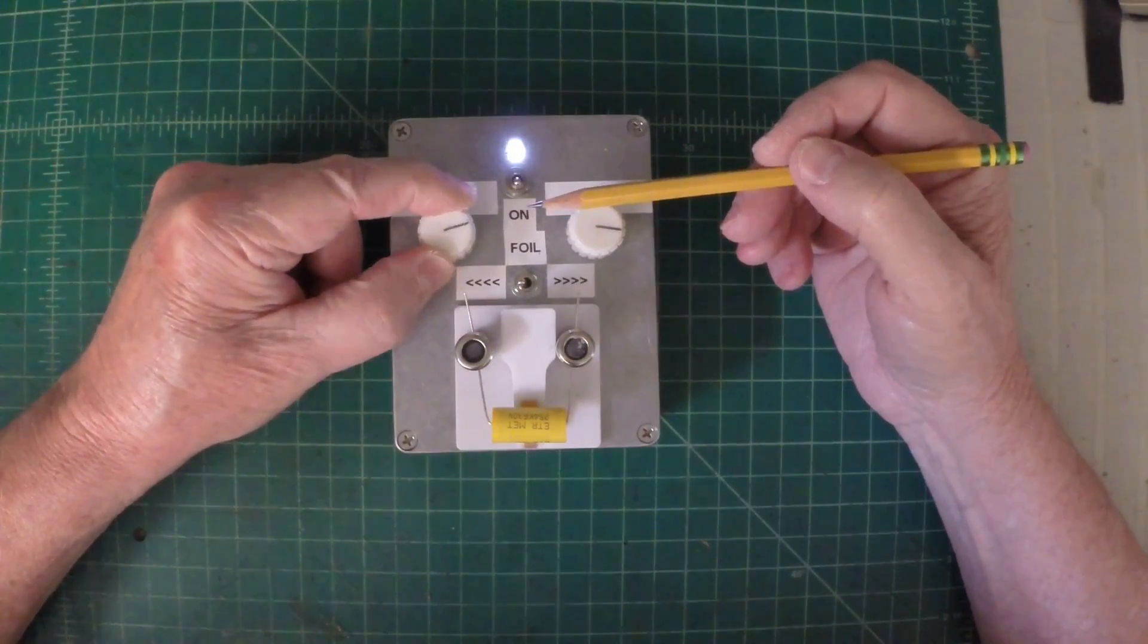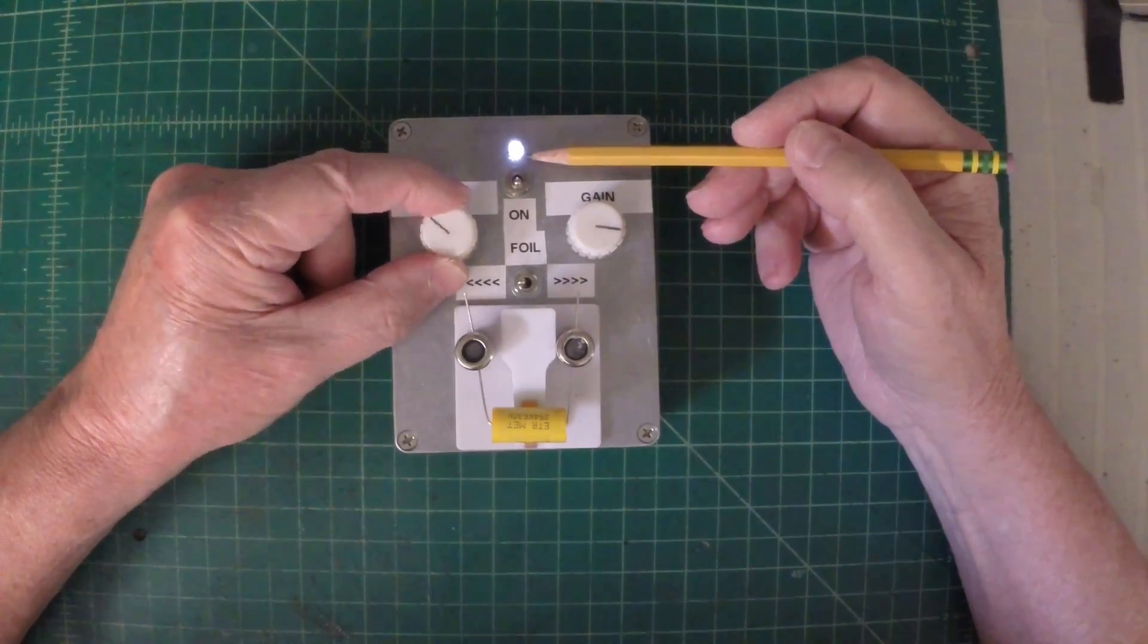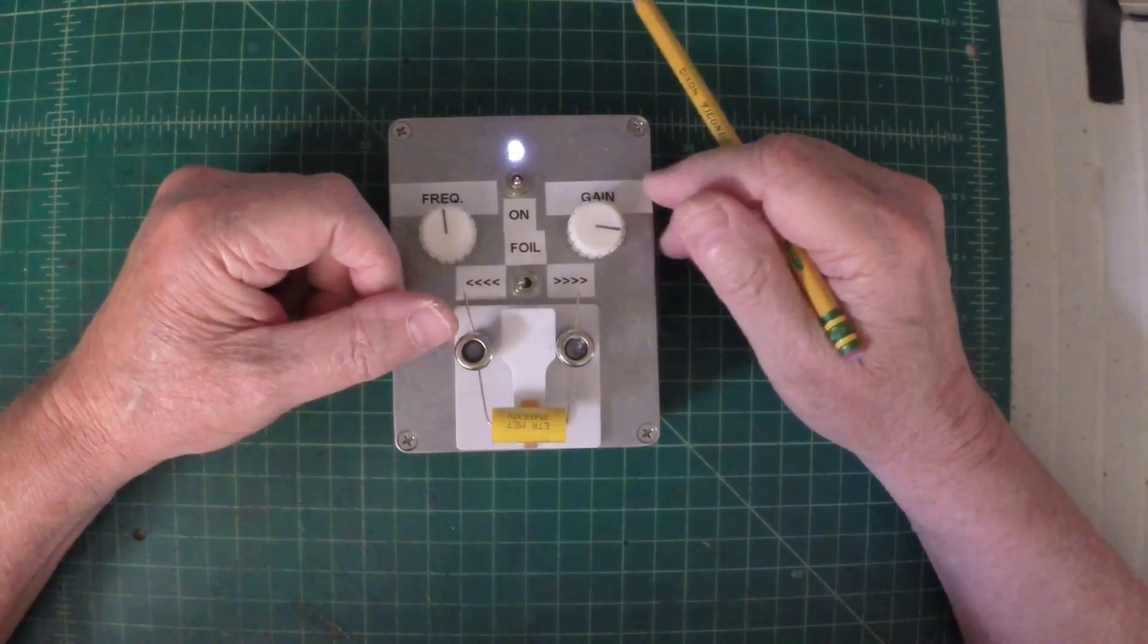You can see here as I vary the frequency of the oscillator, you can see the LED illuminate just a little bit brighter.